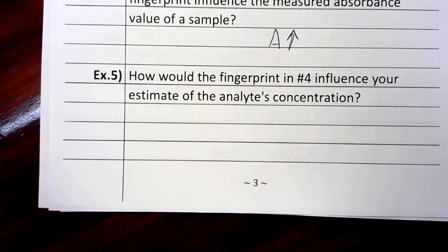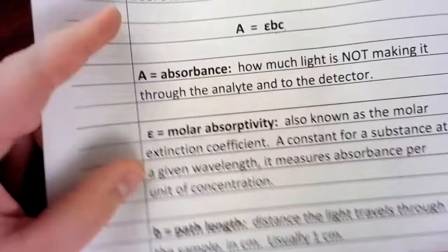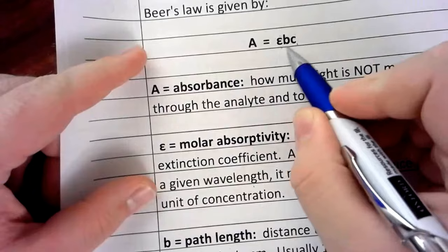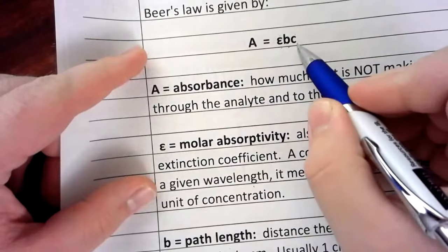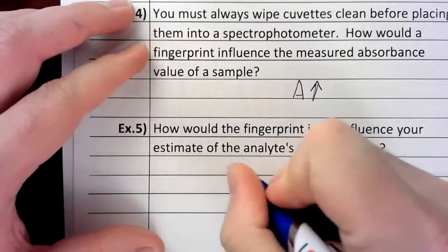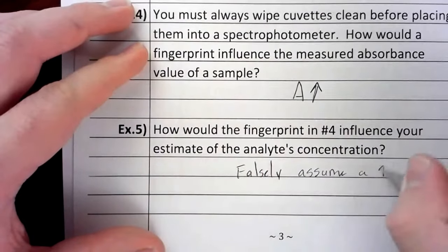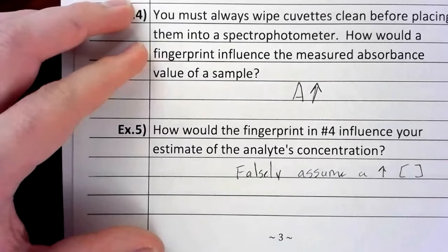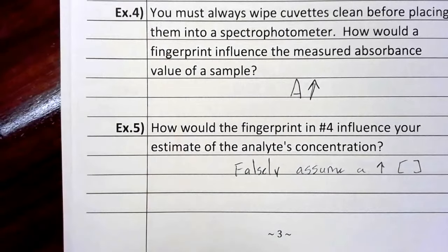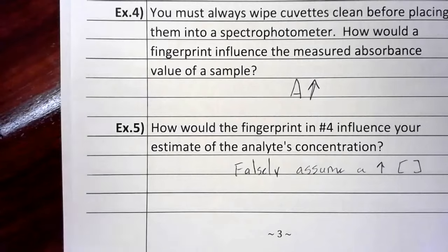So then the question would be, how would this influence your results? Well, if absorbance goes up, remember these two were constants. If absorbance goes up, I would have to assume that so did the concentration. So what would happen is if you had a fingerprint on your cuvette, you would falsely or incorrectly assume a higher concentration. You would assume that the concentration of whatever's in that cuvette is a little higher than it actually was. More light would be blocked by that fingerprint than should have been blocked by just the sample alone. So having a dirty cuvette usually produces results that are falsely high or overly high.